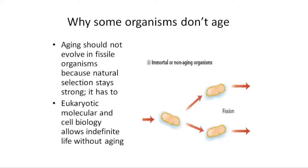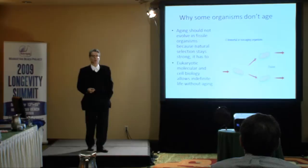To evolutionary biologists, the reasons for this are fairly straightforward. In organisms that evolve by strictly symmetrical fissile reproduction — that's splitting exactly in two with no product of the division being specially favored or disfavored — natural selection stays strong. Because if it didn't, basically that lineage would go extinct. And evolution, therefore, gets rid of the problem of aging.